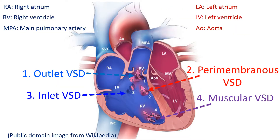Important locations of VSD are perimembranous, muscular, outlet, and inlet. Outlet VSD is near the outlet of the ventricles, near the origin of the great arteries. The great artery arising from the right ventricle is the pulmonary artery, which takes blood to the lungs for oxygenation. The aorta is the great artery arising from the left ventricle, which carries oxygenated blood to the whole body.